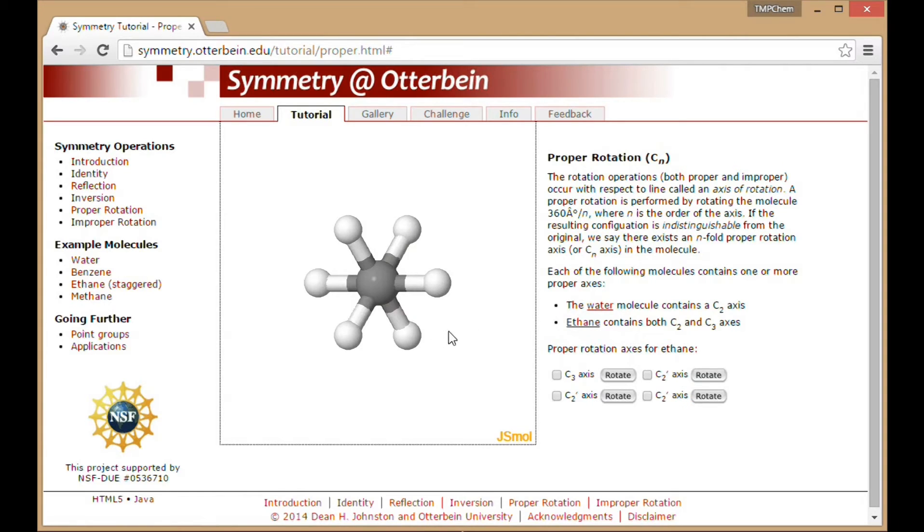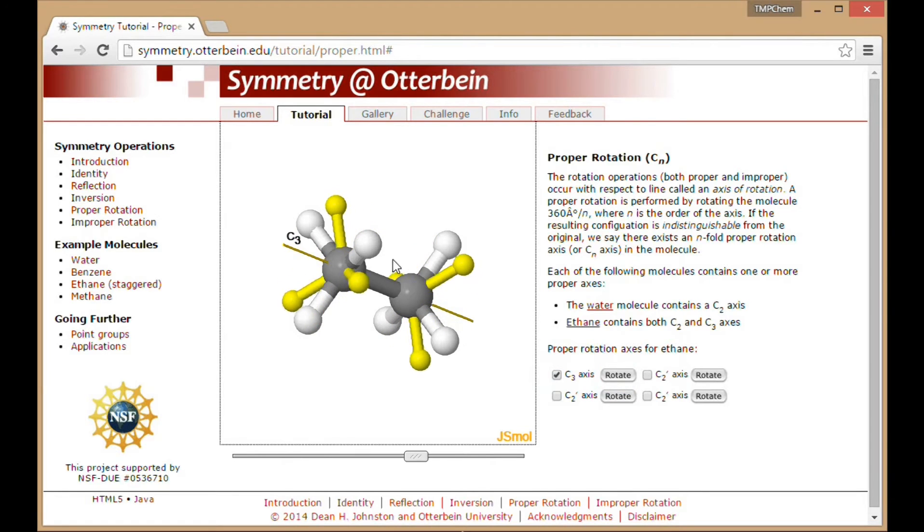Ethane has C2s and C3s. If I look at the C3, which is 120 degree rotation, you can see the molecule rotate by 120 degrees that way.